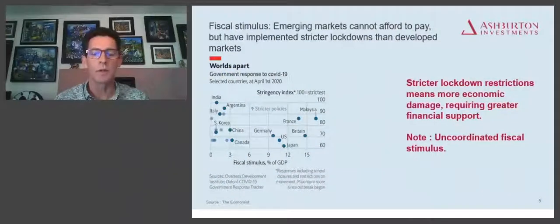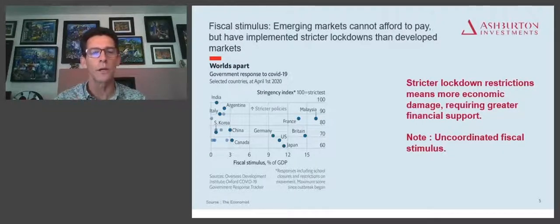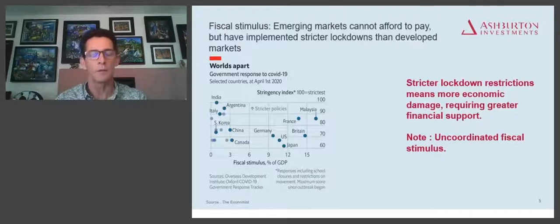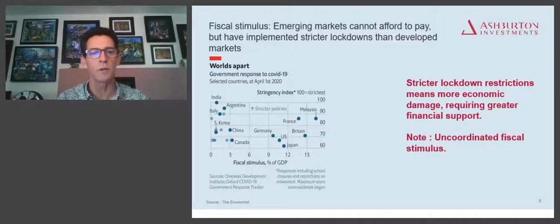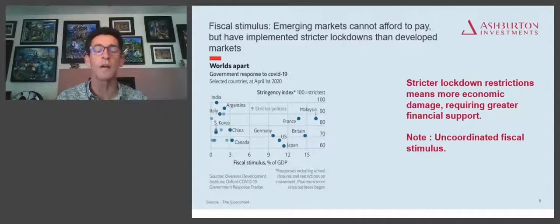Around the world we've seen fiscal stimulus of varying degrees. An important component to think about when looking at where to invest is understanding the dynamics between the developed world on one hand and the emerging markets on the other. If you look at the fiscal stimulus chart — with Britain, the US, Japan being pretty much the developed world — and measuring it against the stringency index in terms of lockdown approach, the countries that implemented the strictest lockdowns are actually the ones that provided the least amount of fiscal stimulus.